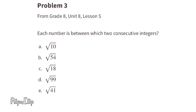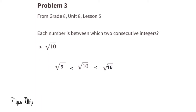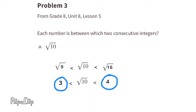Problem number three from 8th grade Unit 8, Lesson 5: each number is between which two consecutive integers? Part a: the square root of 10. The square root of 10 falls somewhere between the square root of 9 and the square root of 16. Since the square root of 9 is 3 and the square root of 16 is 4, the square root of 10 is somewhere between 3 and 4.